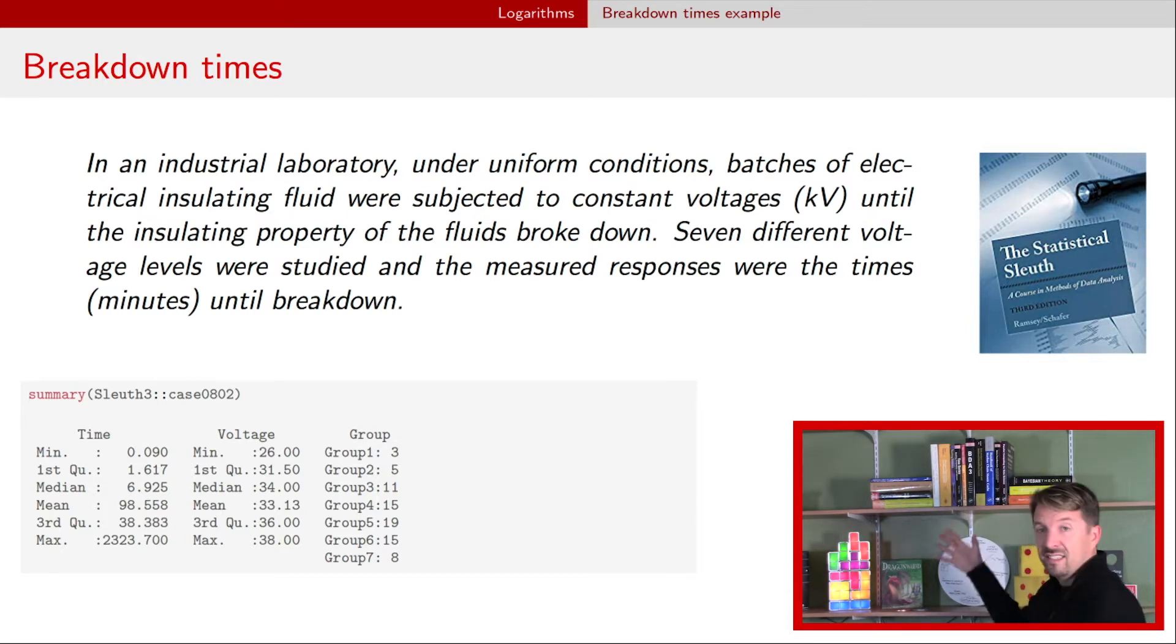All right, so here is this insulating data set example. You can see we have three variables. We have time, voltage, and group. We will come back to group in a bit. But you can see here that time in particular seems a bit skewed. You notice here that the mean is much larger than the median. And so there's a clear expectation of right skewness with time. Remember, time is going to be our response variable. But other than that, things look generally okay.